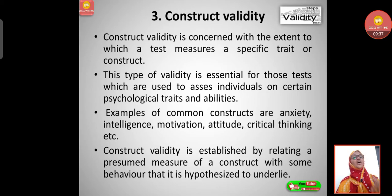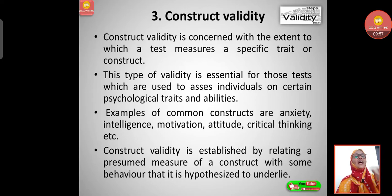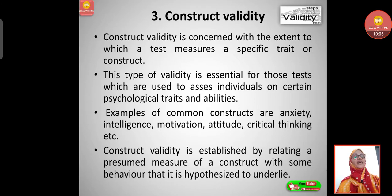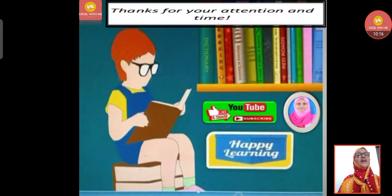The third type is construct validity, which is concerned with the extent to which a test measures a specific trait or construct. This type of validity is essential for tests used to assess individuals on certain psychological traits and abilities. Common constructs include anxiety, intelligence, motivation, attitude, and critical thinking. Construct validity is established by relating the presumed measure of a construct with behavior that is hypothesized to underlie it.